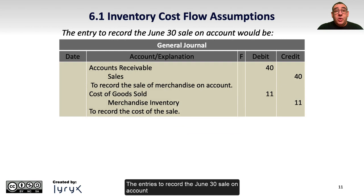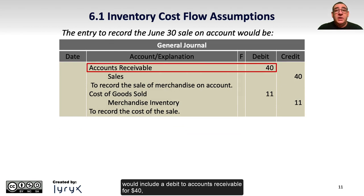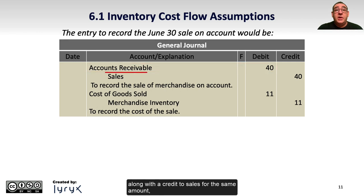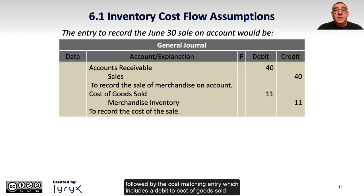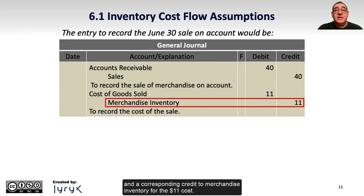The entries to record the June 30 sale on account would include a debit to accounts receivable for $40, along with a credit to sales for the same amount, followed by a cost matching entry which includes a debit to cost of goods sold and a corresponding credit to merchandise inventory for the $11 cost.